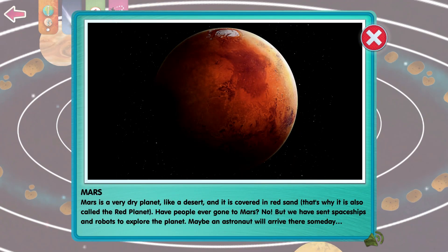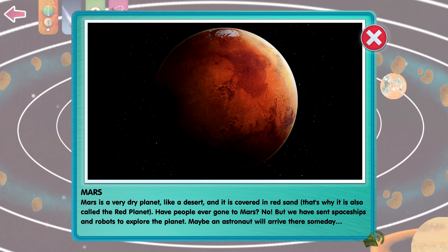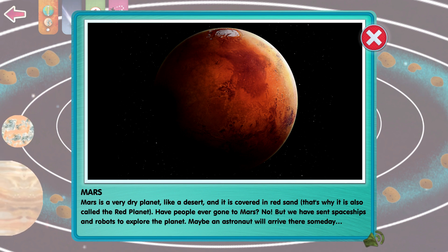Mars is a very dry planet, like a desert, and it's covered in red sand. That's why it's called the Red Planet. Have people ever gone to Mars? No, but we've sent spaceships and robots to explore the planet. Maybe an astronaut will arrive there someday.